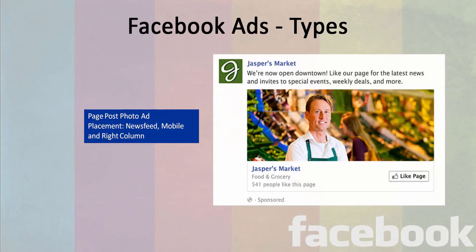Another type of Facebook ad is a page post photo ad. These type of ads also get placement on the newsfeed of both mobile and desktop versions, as well as on the right column of the newsfeed.